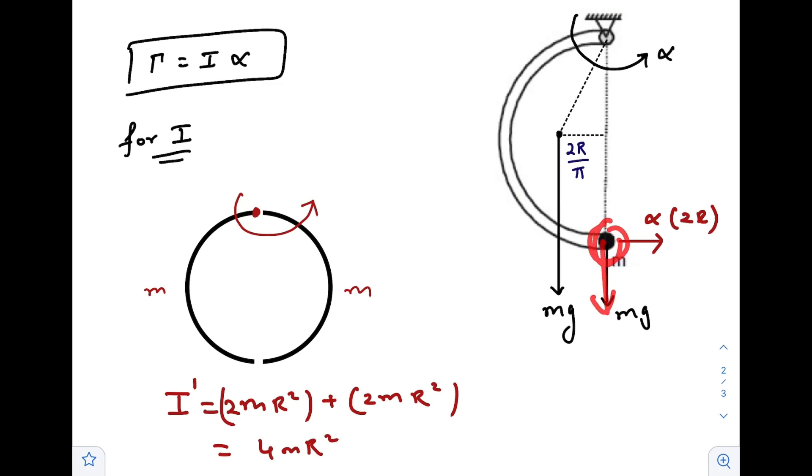And there would be another force due to this point mass mg, but the actual torque will be created by this one. So the torque will create an angular acceleration alpha. For that we need to find out the moment of inertia of the whole structure with respect to this axis.